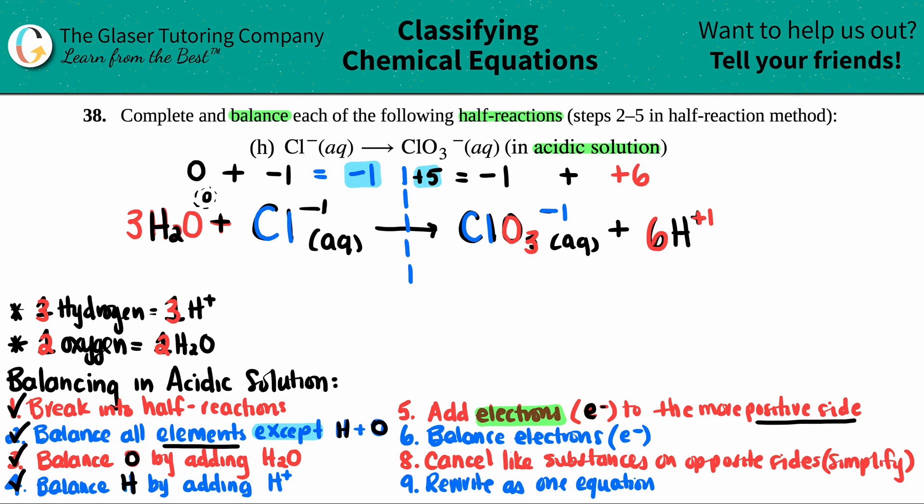Okay. So now we got to add those electrons. We got to balance these charges. Which side is the more positive side? Because that's the one that's going to get the electrons added. Well, from a negative one or a plus five, the plus five is more positive. So I know that I'm going to add my electrons to my product side. The question is, how many am I going to add here, right?